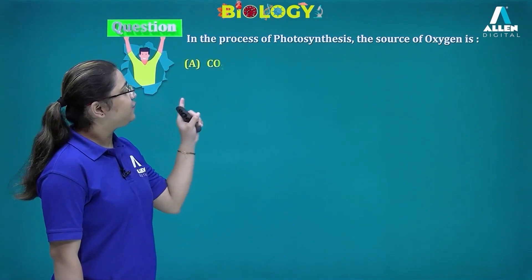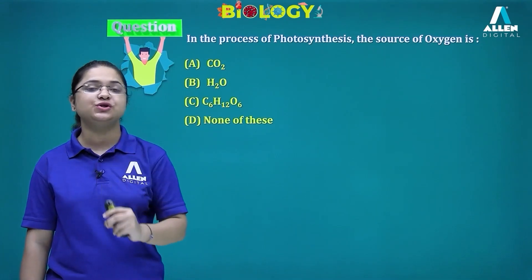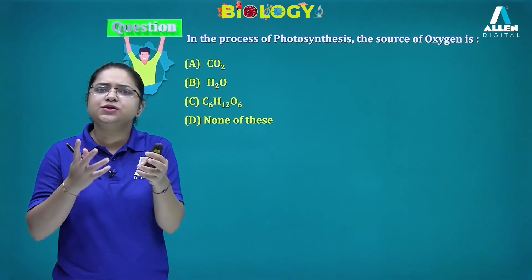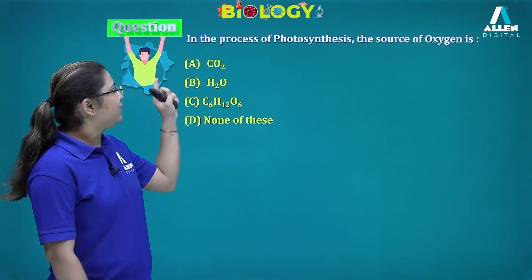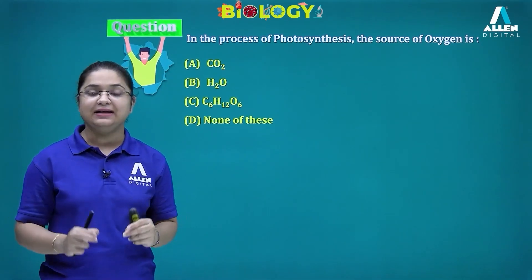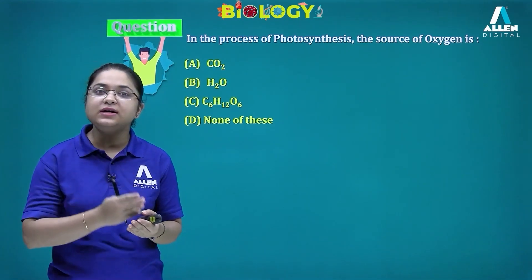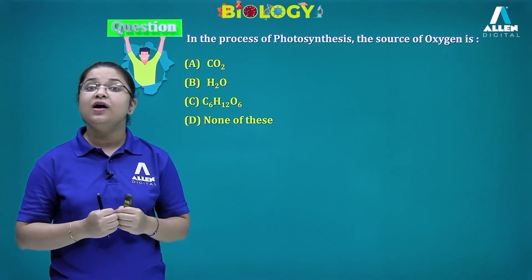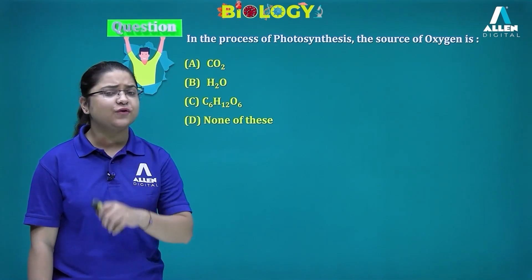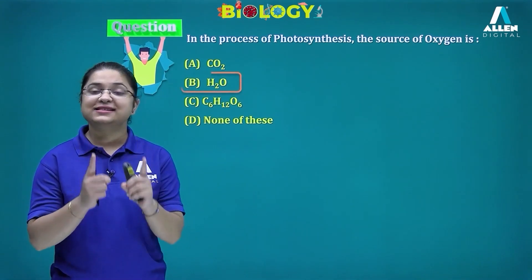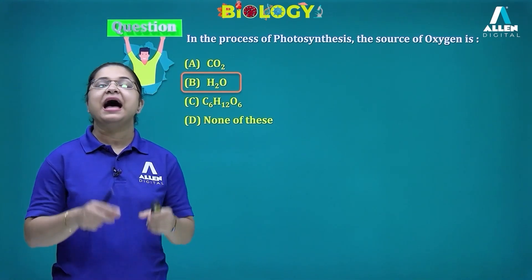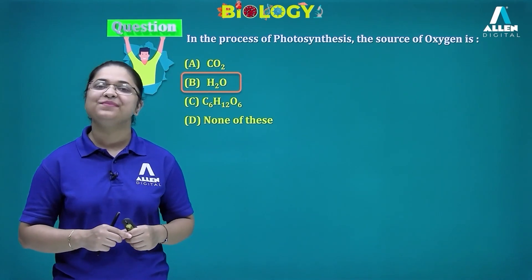In the process of photosynthesis, what is the source of oxygen? Options: from carbon dioxide, from water, from glucose, or none of these. We must remember that in photosynthesis, water breaks down in the presence of light to release oxygen. So the oxygen comes from the water. I hope this section was very clear and you were able to solve the questions. Thank you.